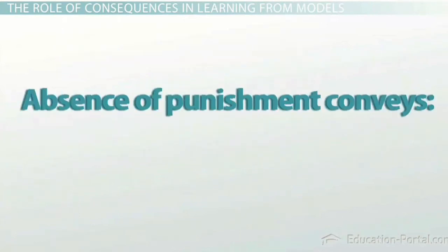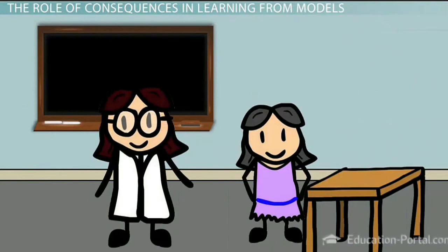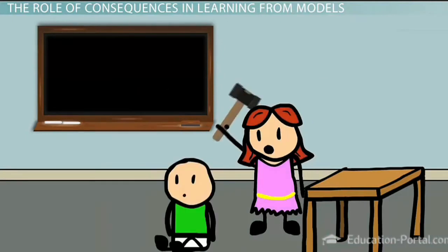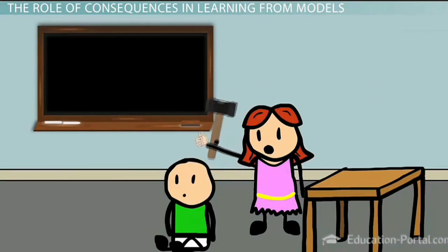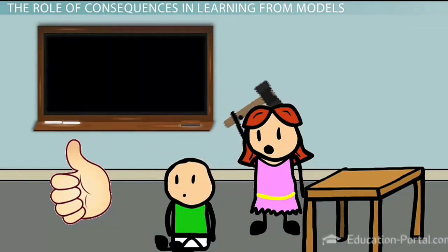The absence of punishment conveys several things as well. Specifically, it conveys a message of implicit acceptance of the behavior. An example is a classroom in which the teacher is careless about monitoring exams and cheating occurs. If the cheating goes unpunished, others are more inclined to cheat on the next test. Similarly, when aggressive actions go unpunished or when people respond approvingly or indifferently to violence, this is viewed as both acceptable and expected in similar circumstances.